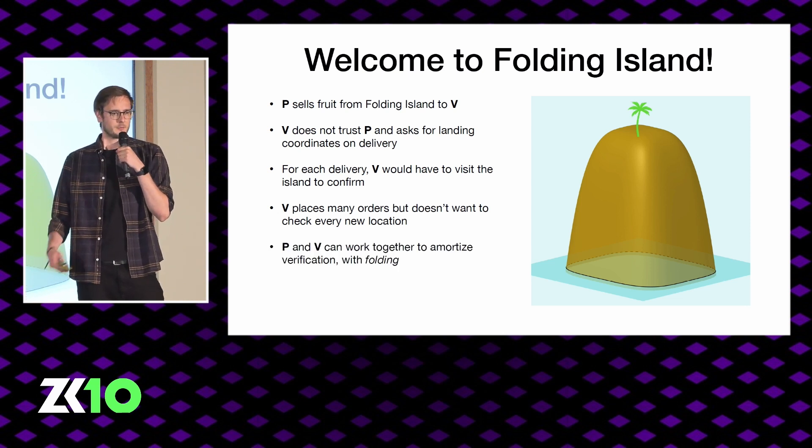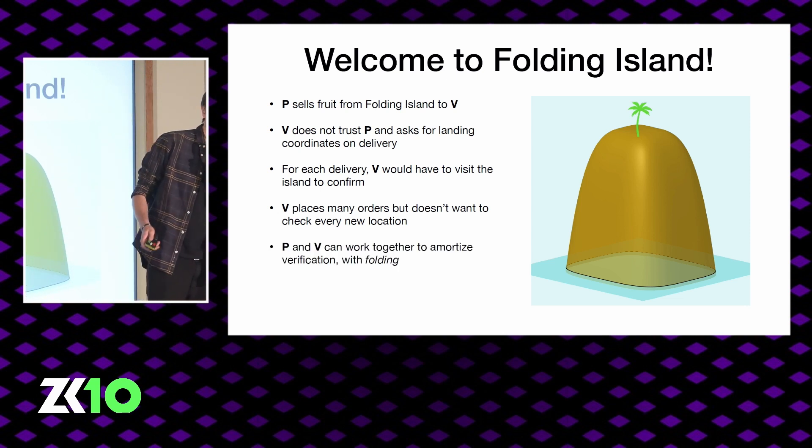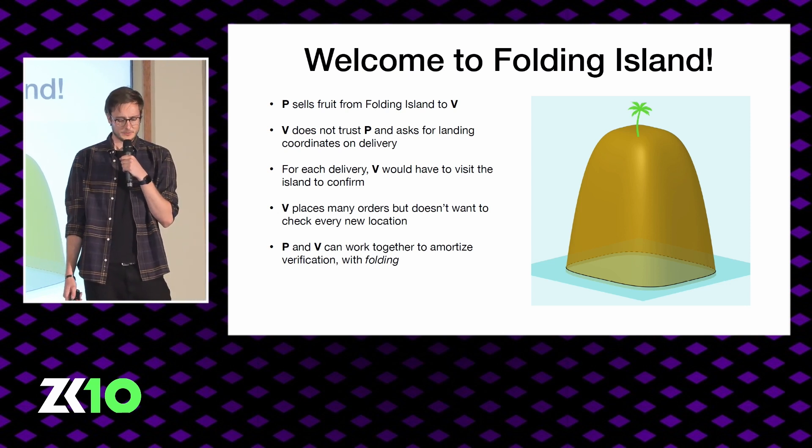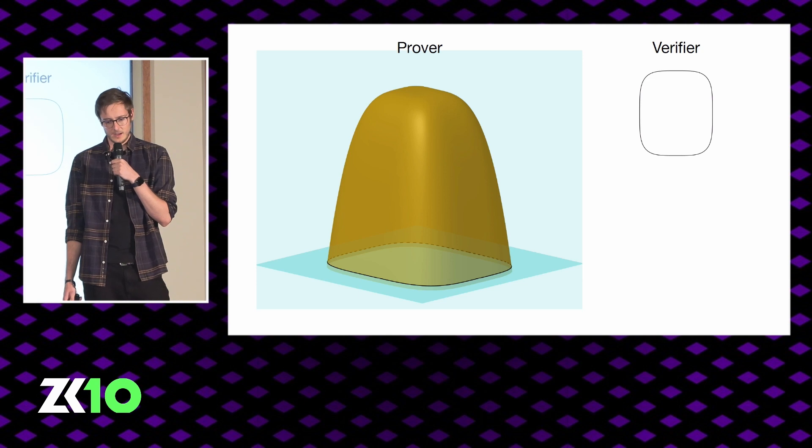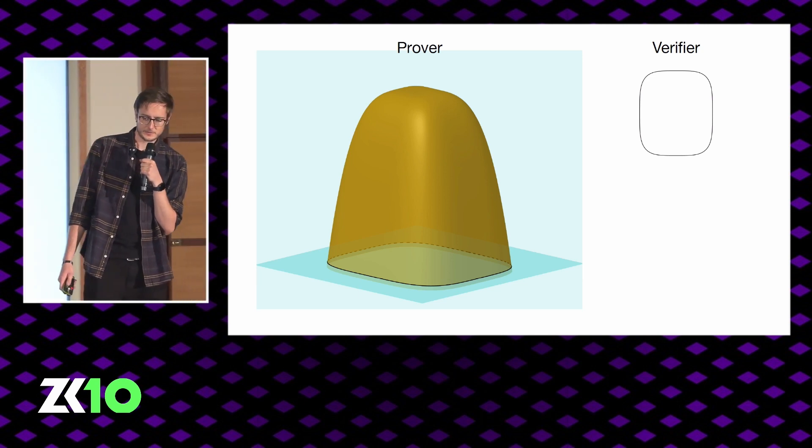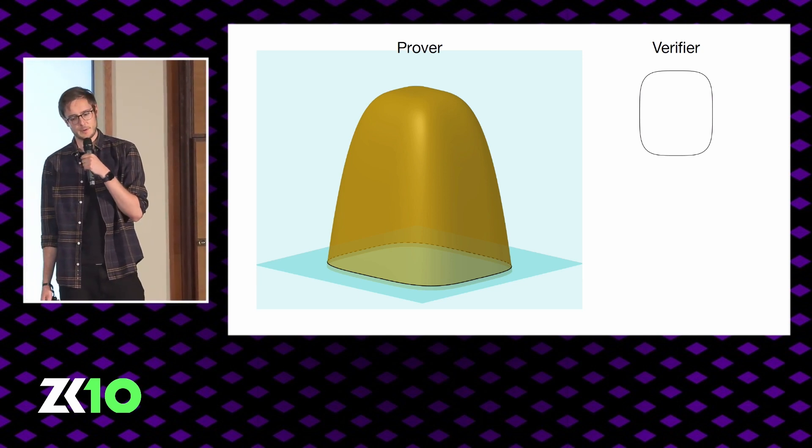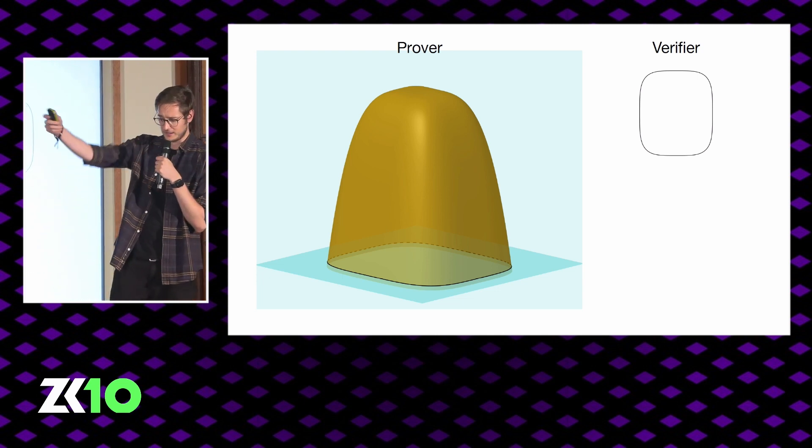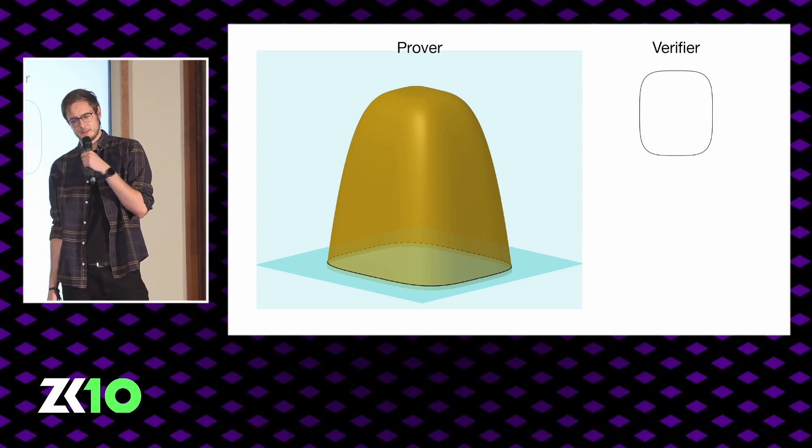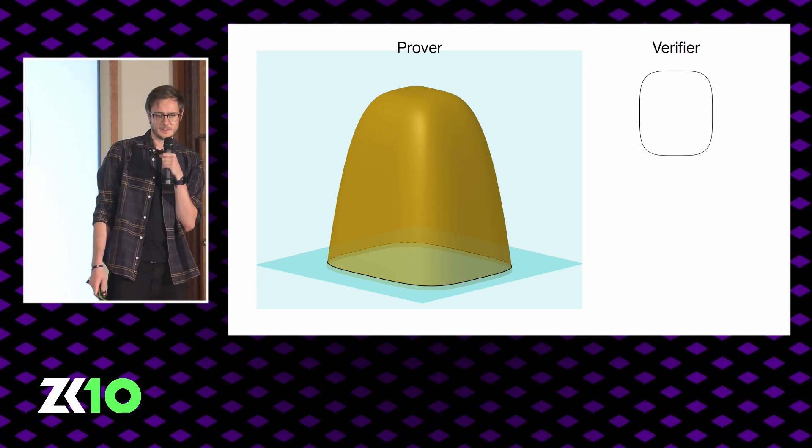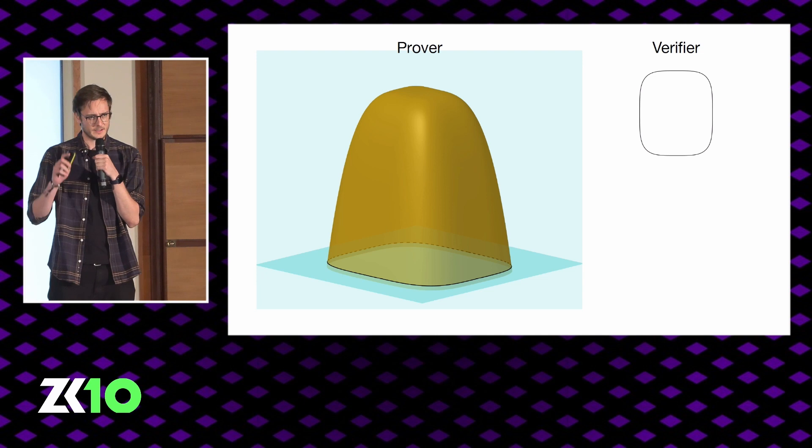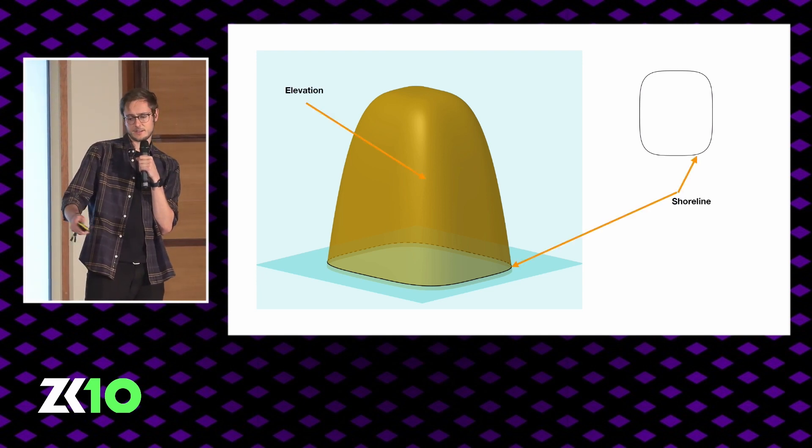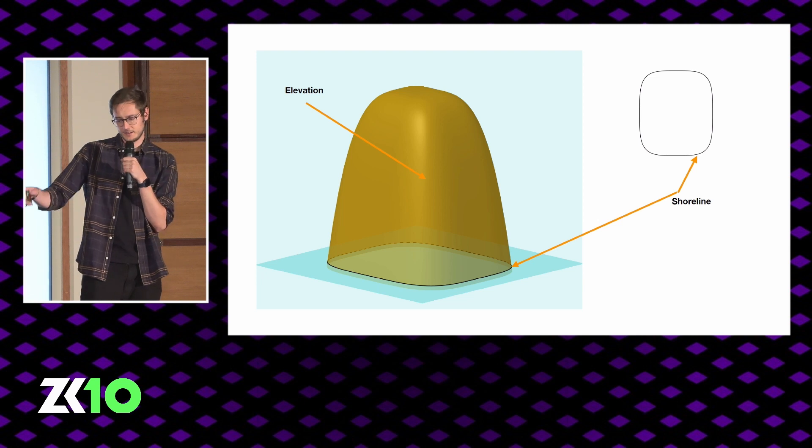We're going to come up with this folding-like technique which is going to make things more efficient for the verifier with only a little bit of extra work for the prover. On the left here we've got the prover's perspective. He actually goes to the island so he sees it in all its glory, including the elevation. The verifier knows that this fruit grows on an island with a very specific shape, but he only has a 2D view of it. We're interested in the elevation of the island and the shoreline.